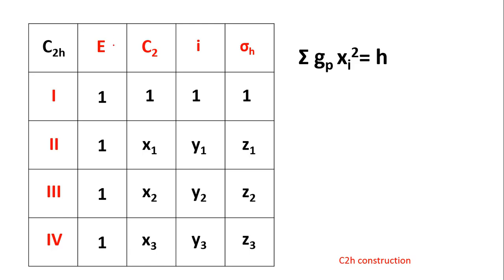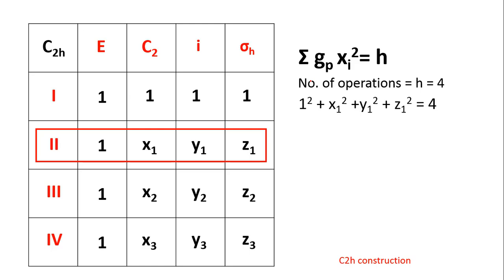For E, the number of operations is 1; for C2 it is also 1; for I it is 1; and for sigma H it is also 1. So gp is always 1 in this group, and H equals 4. Applying this to the second irreducible representation — with characters 1, x1, y1, z1 — we get: 1² + x1² + y1² + z1² = 4.